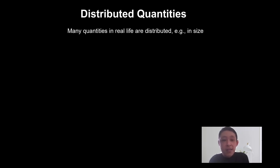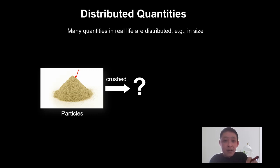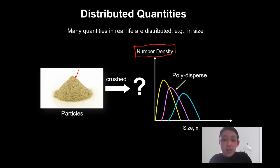In real life, many quantities are being distributed. For example, they will be distributed in size. If you look at a bunch of particles and you sample them, going and counting the number of particles for a particular size, you'll be able to build a distribution curve. Let's call this distribution the number density.